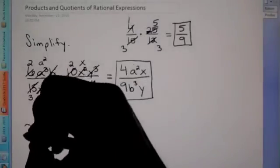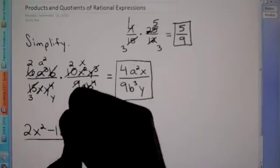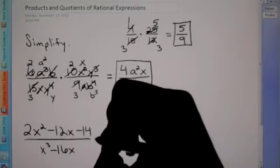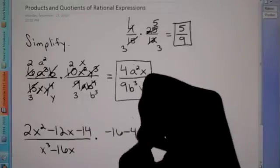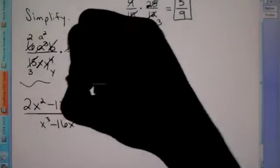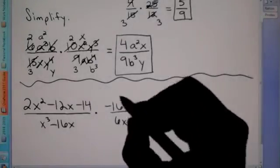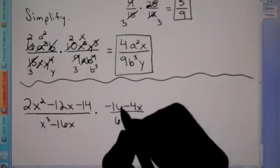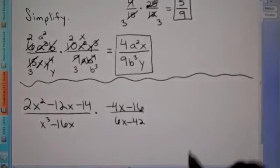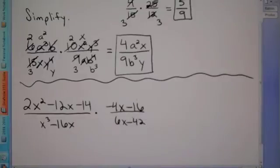Now let's make this a little bit harder. We have 2X squared minus 12X minus 14 over X to the 3rd minus 16X, times negative 16 minus 4X over 6X minus 42. On a problem like this, my recommendation is to first rewrite where X is in front of the number without X. So I'm going to rearrange this to make it negative 4X minus 16 — all I did was switch the order so the X terms come first.